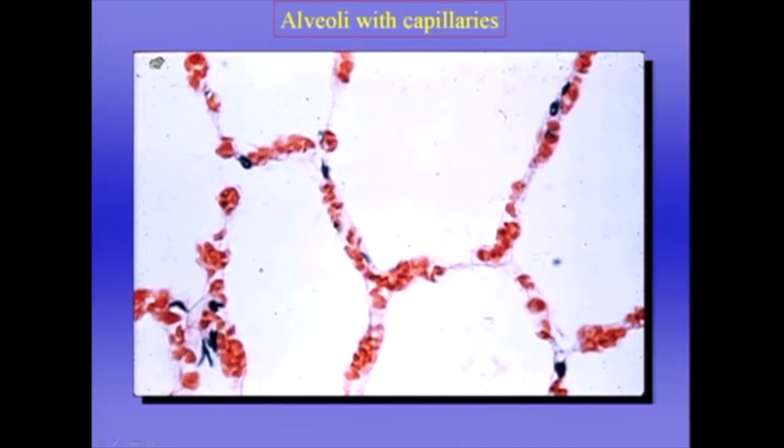Then we get down to the alveoli, with capillaries in the wall and the blood-gas barrier.